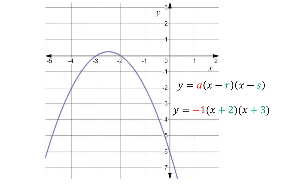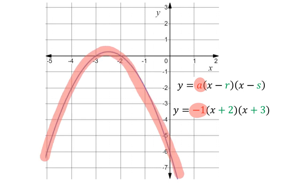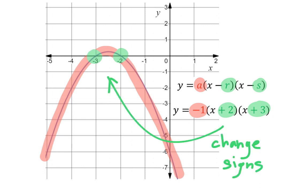I've gone ahead and graphed this parabola. The variable a was negative 1, so the parabola had to be frowning or opening downwards. The variables r and s were positive 2 and positive 3, which meant the x-intercepts had to be negative 2 and negative 3. Don't forget — you need to change the signs when determining the x-intercepts.